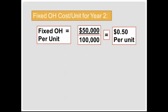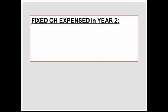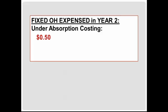Based on this, we can figure out how much fixed overhead is expensed under each method. The difference in fixed overhead expense in year two will tell us the dollar difference in income between the two methods, since that is the one item treated differently. Under absorption costing, you expense in proportion to sales. We sold 102,000 units, so we take 50 cents per unit multiplied by 102,000 units, giving us $51,000 of fixed overhead expensed — even though we only incurred $50,000, because we're selling some inventory produced last year.